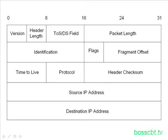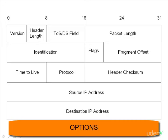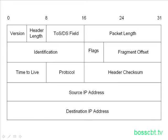Then we have the two obvious fields: the source IP address and the destination IP address. Both are 32-bit IP addresses — the source is who's sending it, and the destination is the intended recipient. If there are optional fields, they would come after the destination IP address. Everything below the destination IP address in the diagram is where your data would be.